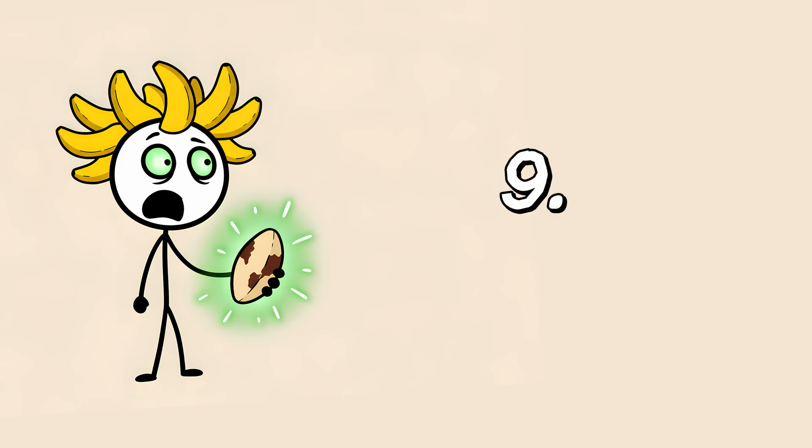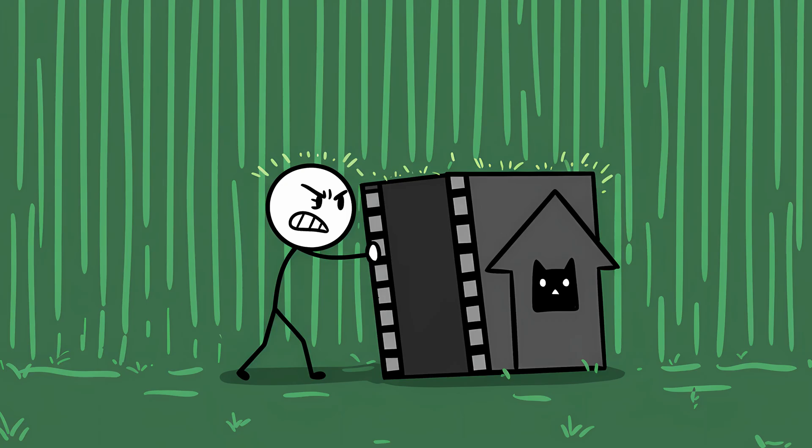Number 9. The Glitch in The Matrix. We have to get this one out of the way. Because if we don't, the entire comment section will just be quotes from a movie that's old enough to have a mortgage.